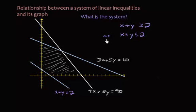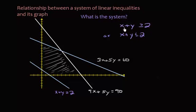The easiest way of doing this is to check it. You can graph it separately if you'd like, but you need to figure out which point works. Because when you graph this line x plus y equals 2, to know which side to shade, you'd pick a point, evaluate the inequality, and see if it works.